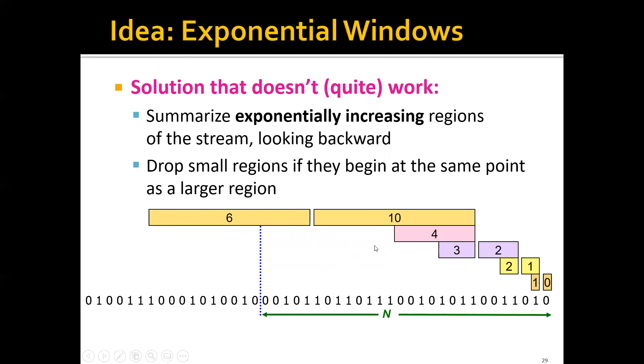In order to count the total number of 1s in the most recent N bits, all we want to do is just to add up all these numbers in the corresponding windows. For example, we can just calculate the number of 1s in the last N bits: we can compute it as 0 plus 1 plus 2 plus 10.